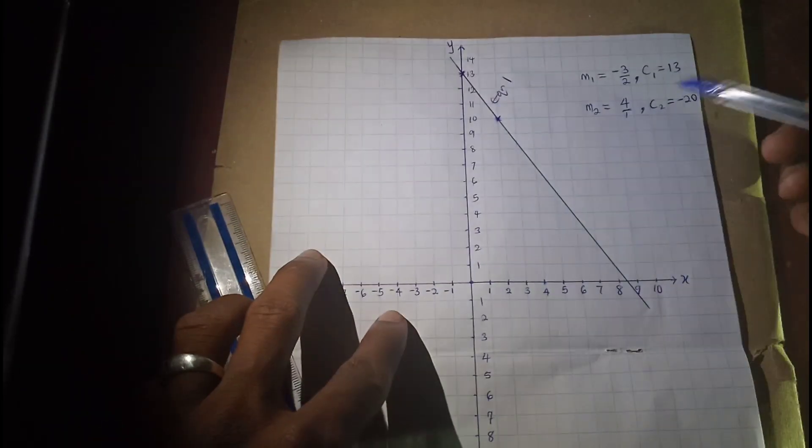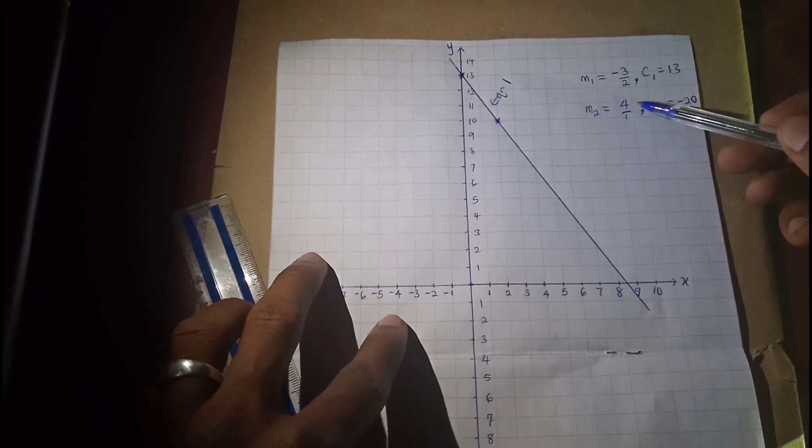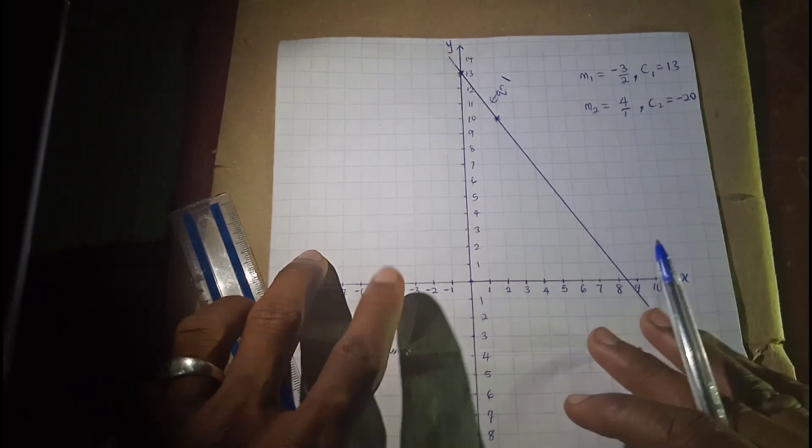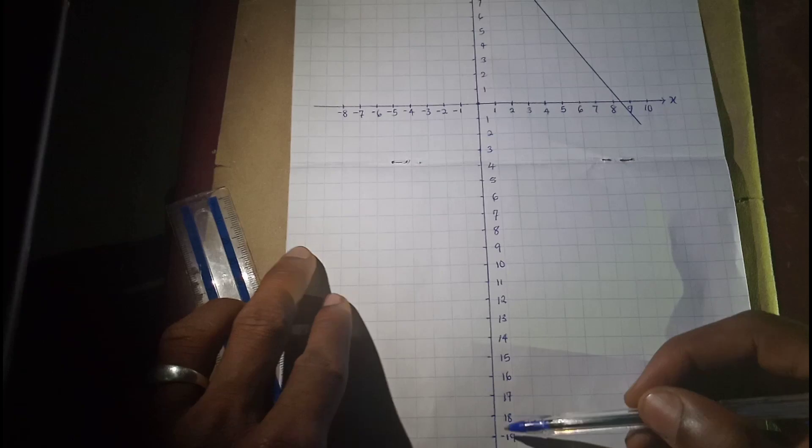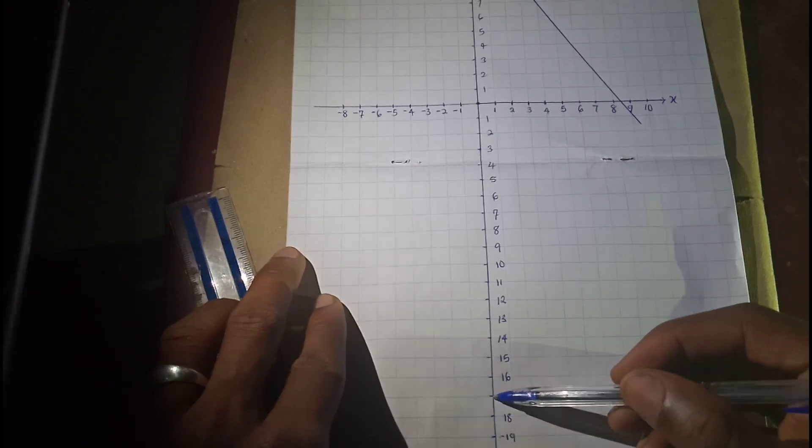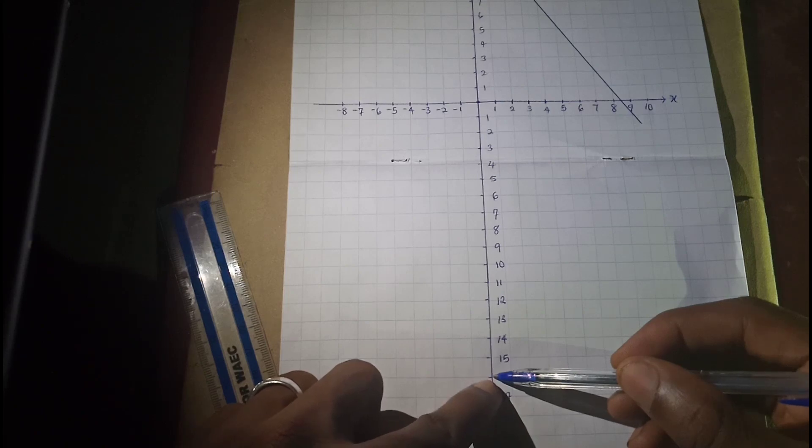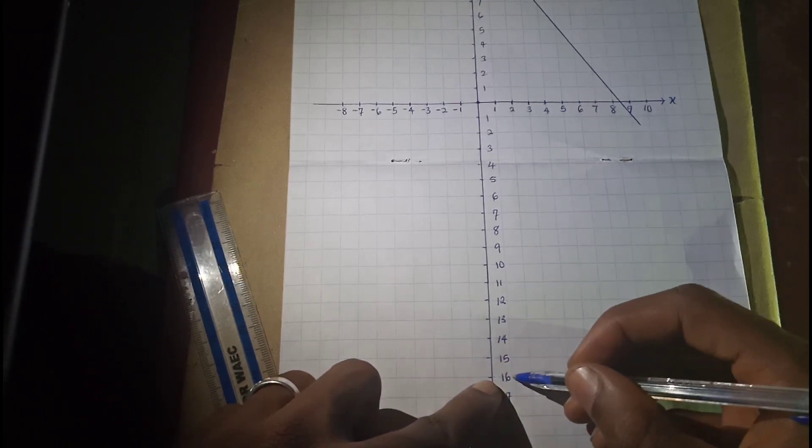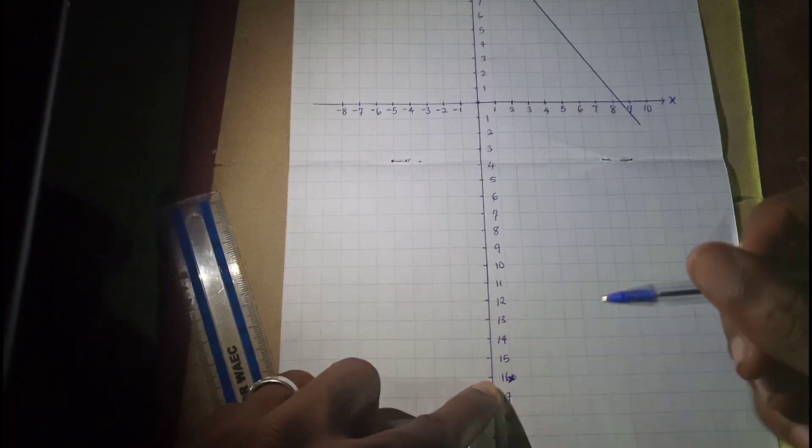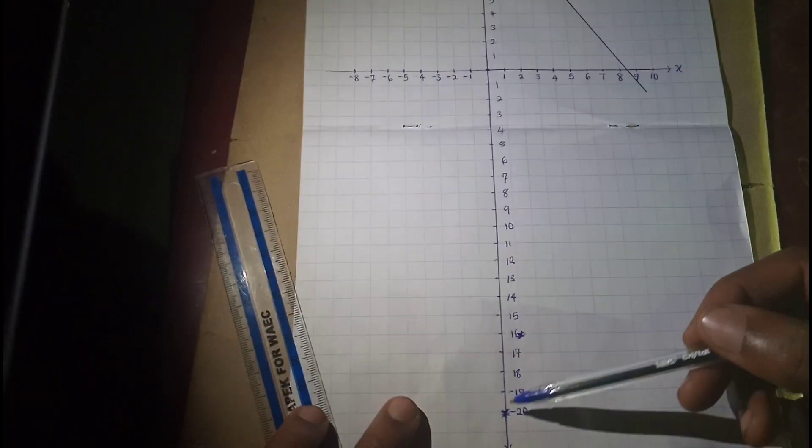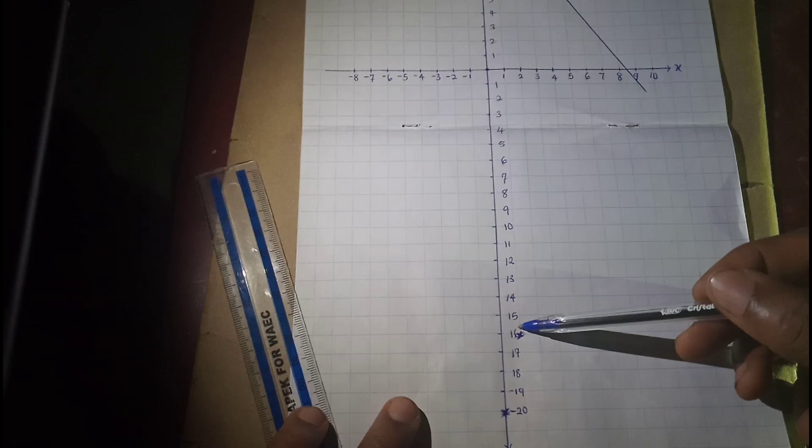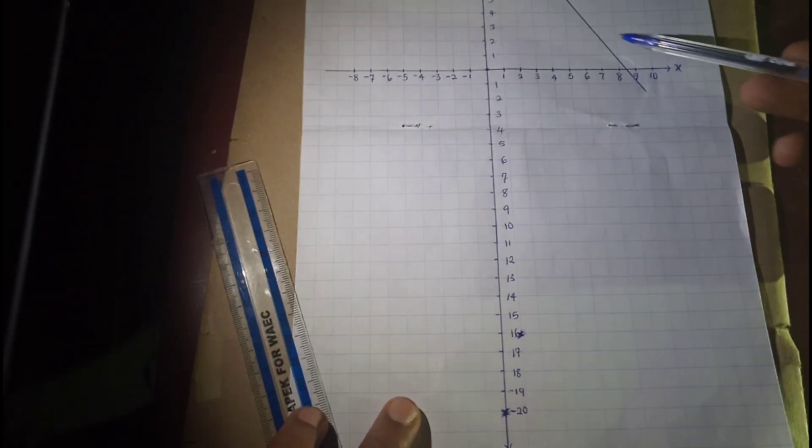Then our slope, rise 4, run 1. 1, 2, 3, 4. We are moving up because it is positive. Then we move to the right-hand side once. So we have 1 here. Then we need to connect the two points together and we extend the line till it meets the line of equation number 1. And this point is exactly where the two graphs meet.